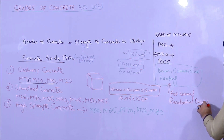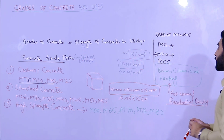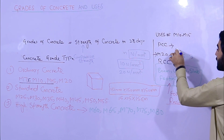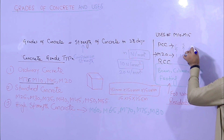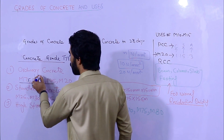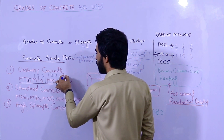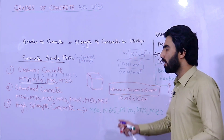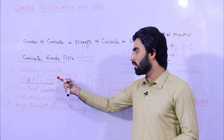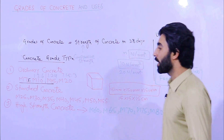The mix ratio of M20 grade concrete is 1:1.5:3, where one part is cement, 1.5 parts is sand, and 3 parts is crushed aggregate. For M10, the ratio is 1:3:6. For M15, the ratio is 1:2:4. From these ratios, we make concrete with the correct proportions of cement, sand, and crushed aggregate.